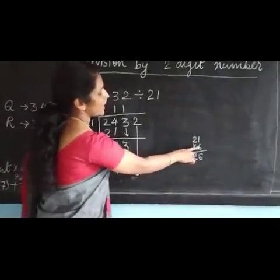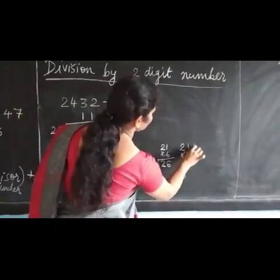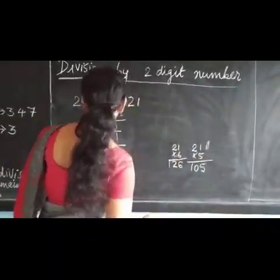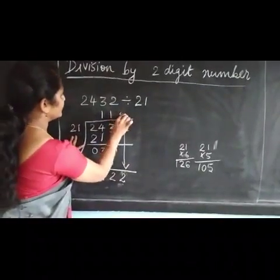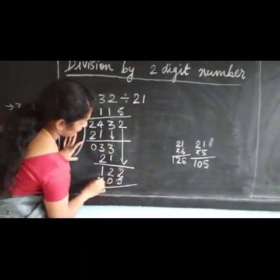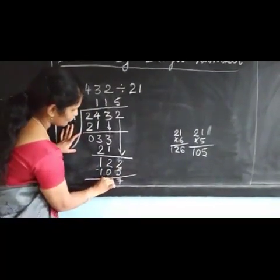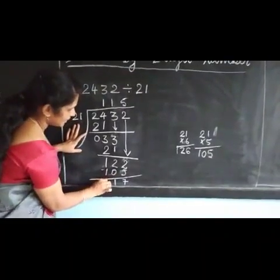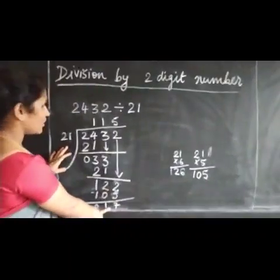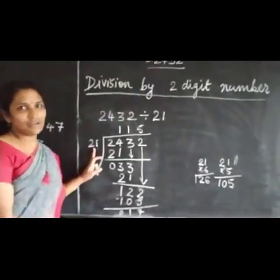Since 126 is more than 122, it will not go 6 times — it will go only 5 times. 21 × 5 = 105. 12 minus 5 is 7, 1 minus 0 is 1, 1 minus 1 is 0. The remainder is 17. Always remember: your remainder will always be less than the divisor.